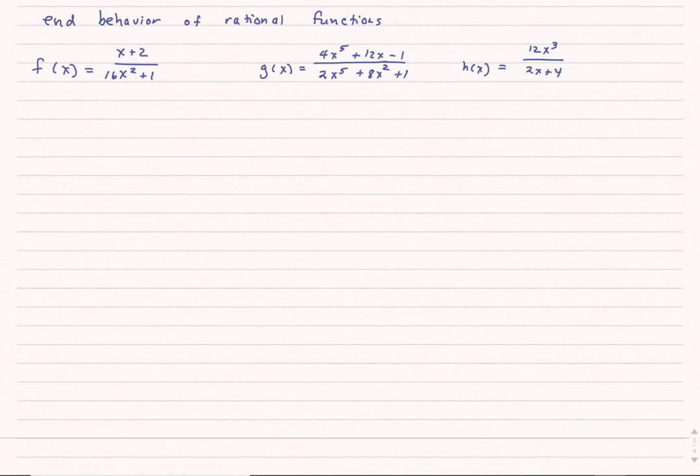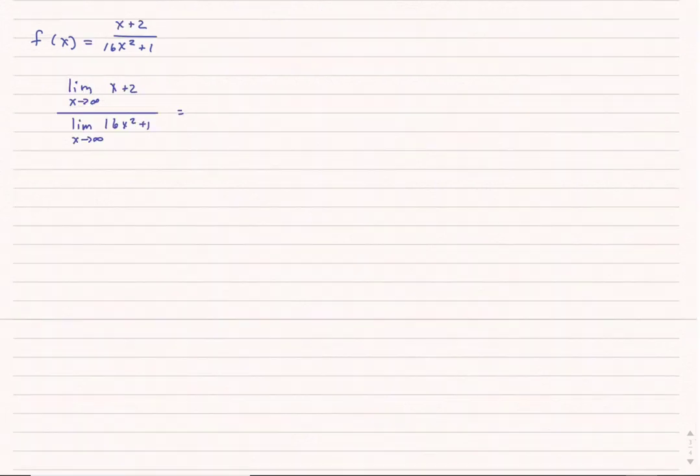This helps us describe the end behavior of rational functions — meaning what happens as x goes to positive and negative infinity. Looking at three examples: the first has numerator exponent 1 and denominator exponent 2, which is called bottom heavy. The second has the same highest exponent (x to the fifth) in both numerator and denominator. The third has the numerator with a greater exponent, which is called top heavy.